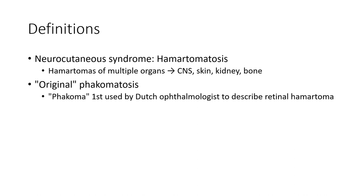Definition: Tuberous sclerosis is a neurocutaneous syndrome characterized by hamartomas of multiple organs including the CNS, skin, kidney, and bone.